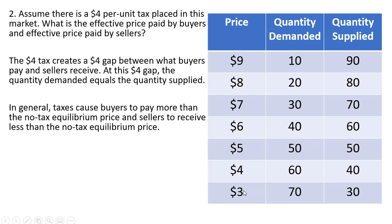Notice that if the price is $7, the quantity demanded is 30. And if we subtract $4 from $7, we have a price of $3 and the quantity supplied is 30. So $7 is the effective price that buyers pay after the tax — buyers will be paying $7 and buying 30 units. Sellers will be receiving $3 and providing 30 units. So the equilibrium quantity after the tax is going to be 30.